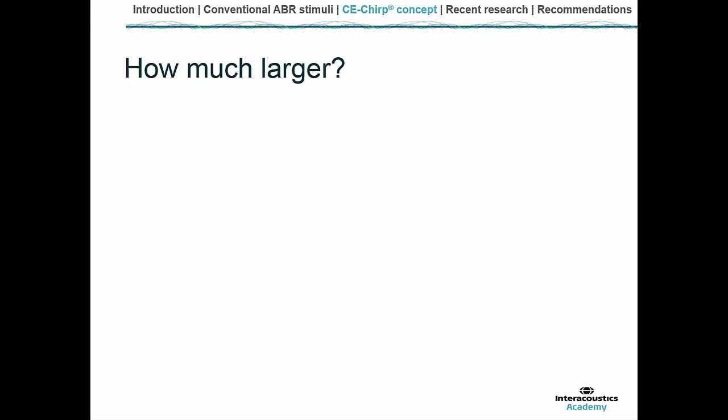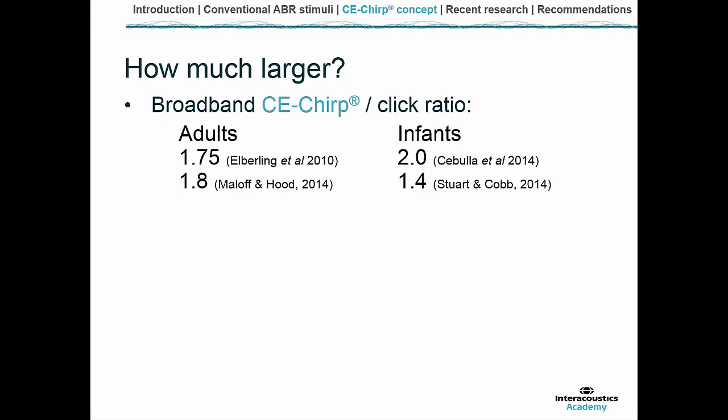So the response is larger — but how much larger when we compare the CE chirp to the traditional click? Various studies have looked at the ratios. For broadband chirps in adults, Klaus Ebeling and colleagues found the chirp is about 1.7 times larger, and Marloff and Hood found it about 1.8 times larger. In infants, Sabula et al. found it was twice as large, whereas Stewart and Cobb found it 1.4 times as large — the difference may be down to study design.